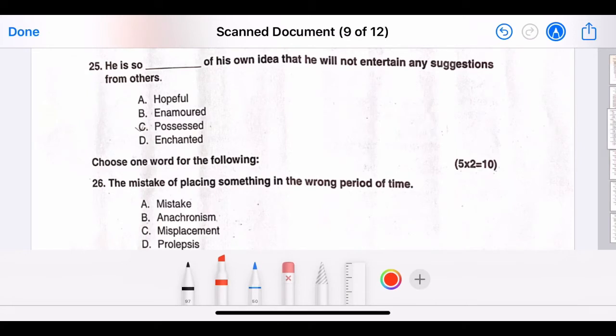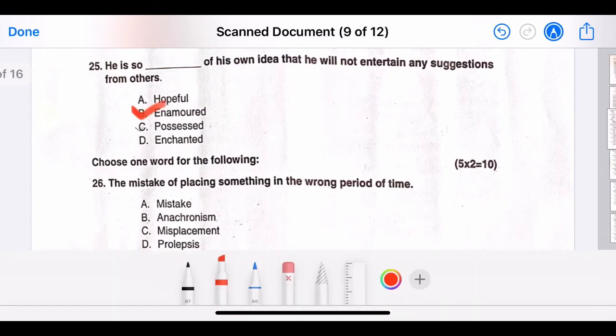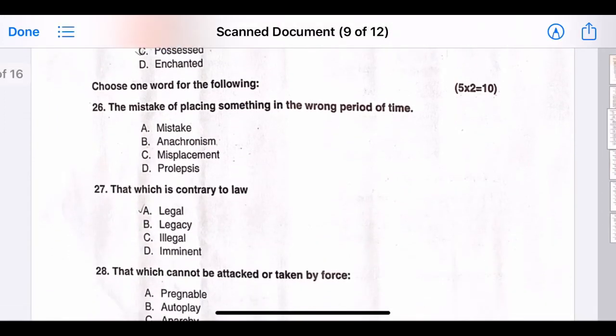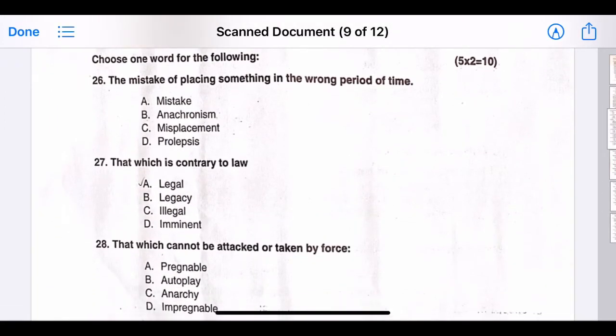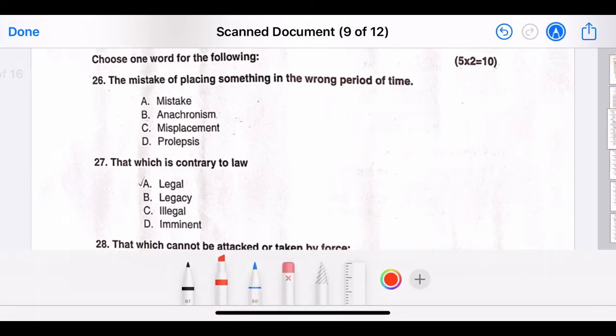Twenty-five, he is so blank of his own idea that he will not entertain any suggestions from others. The correct answer is option B, that is enamored. Choose one word for the following. Twenty-six, the mistake of placing something in the wrong period of time. Anachronism, that is option B.